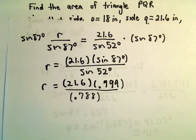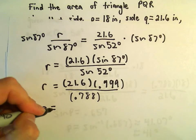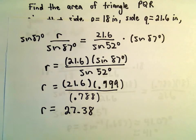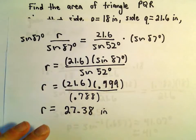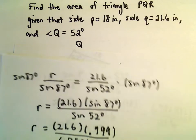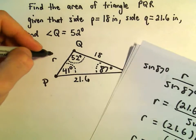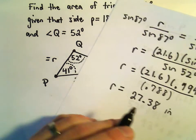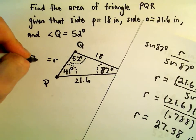So let's see, we'll do 21.6 times 0.999, not going to change that much, divided by 0.788. I'm getting this to equal 27.38, I guess inches, since that's what we were using before. So okay, so we're getting a little bit closer. I think I'll round this off. So 27.38, I'm going to round that off to 27.4.